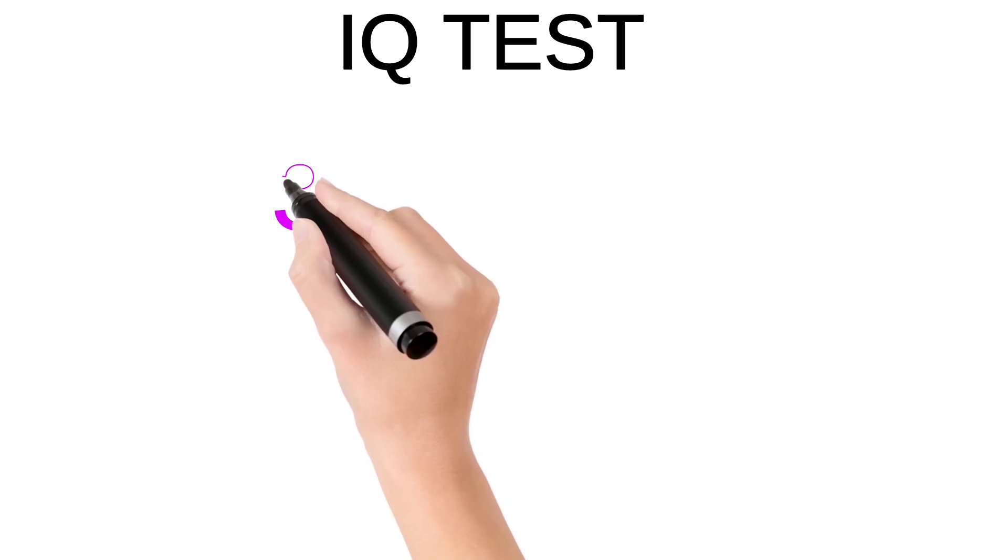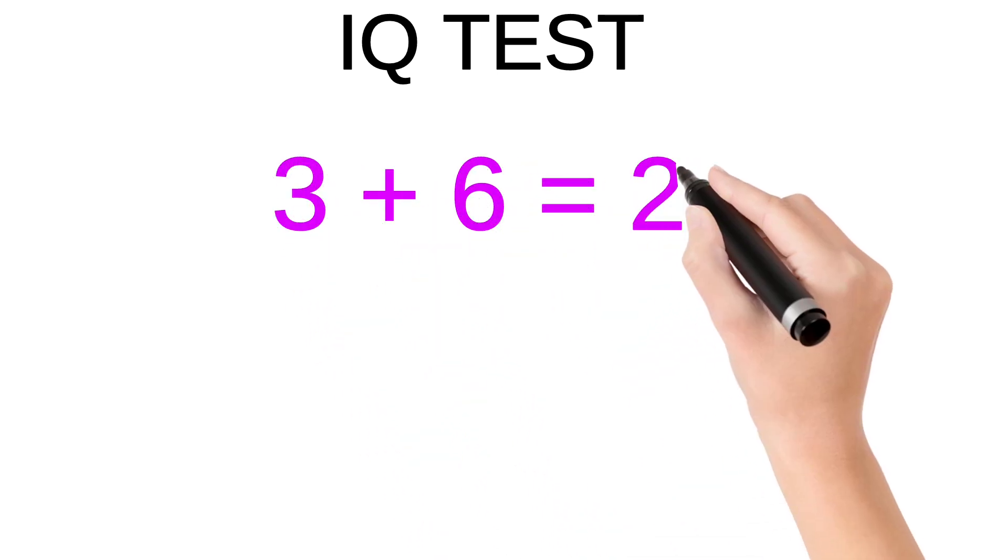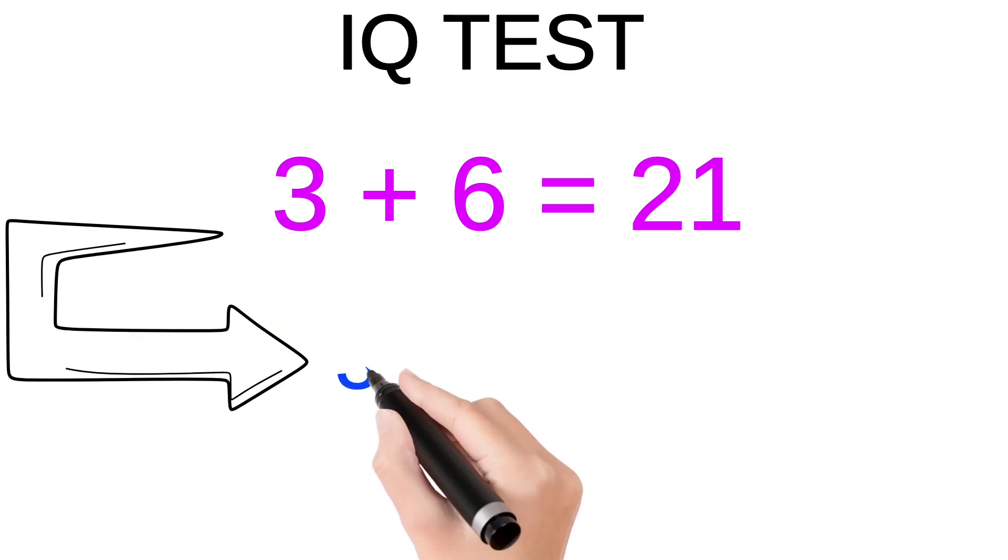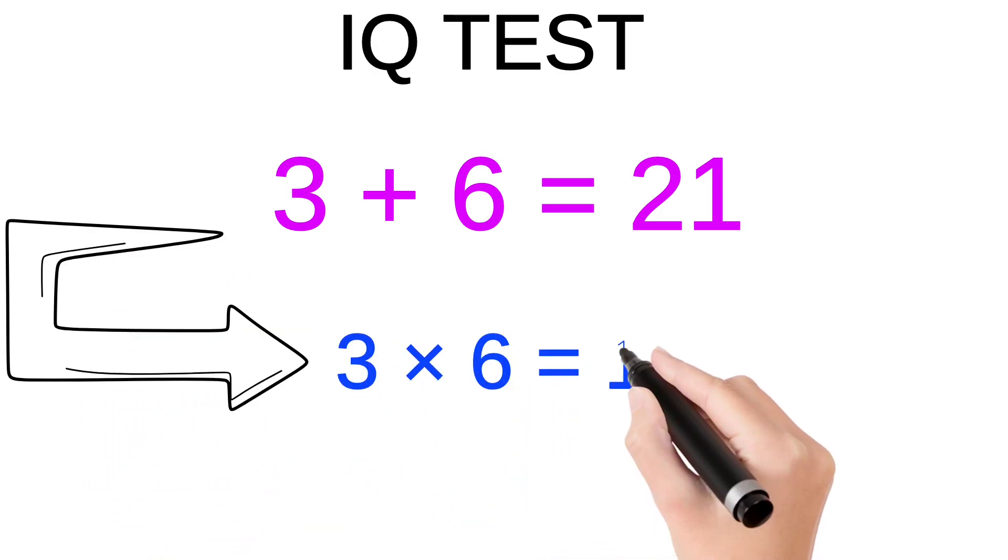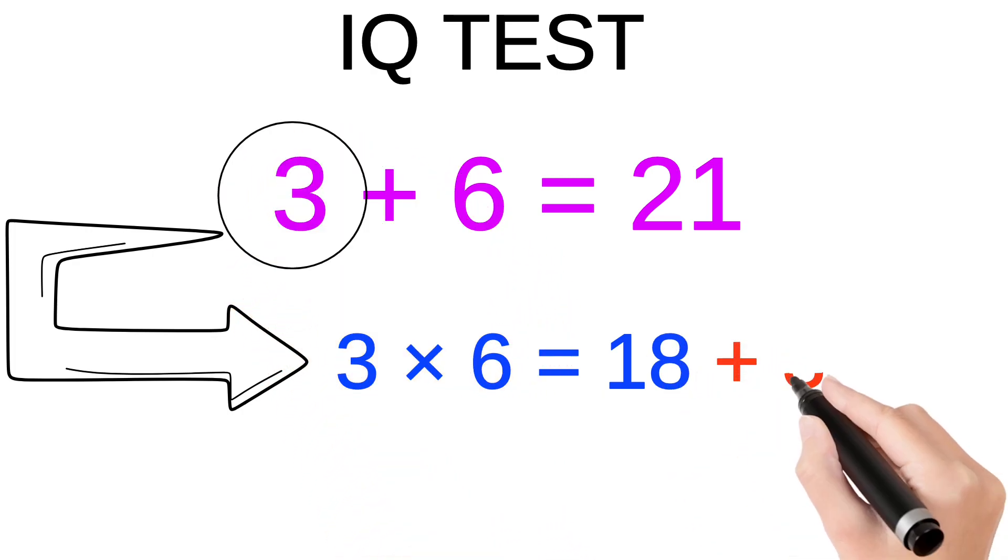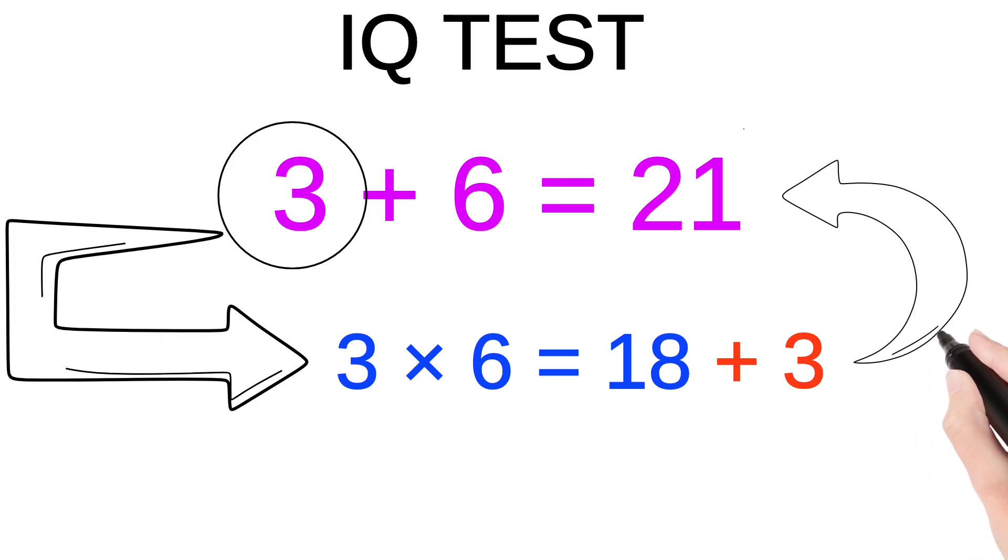Similarly, we have 3 + 6 = 21. If we multiply both numbers, that is 3 × 6, we get 18, and now if we add the first number which is 3, we get 21.